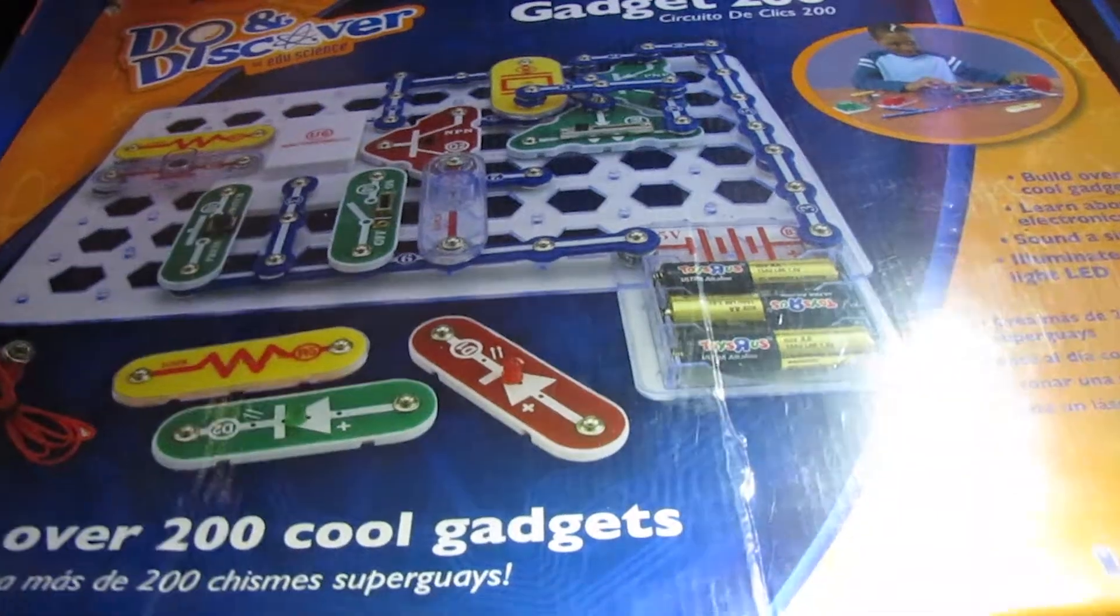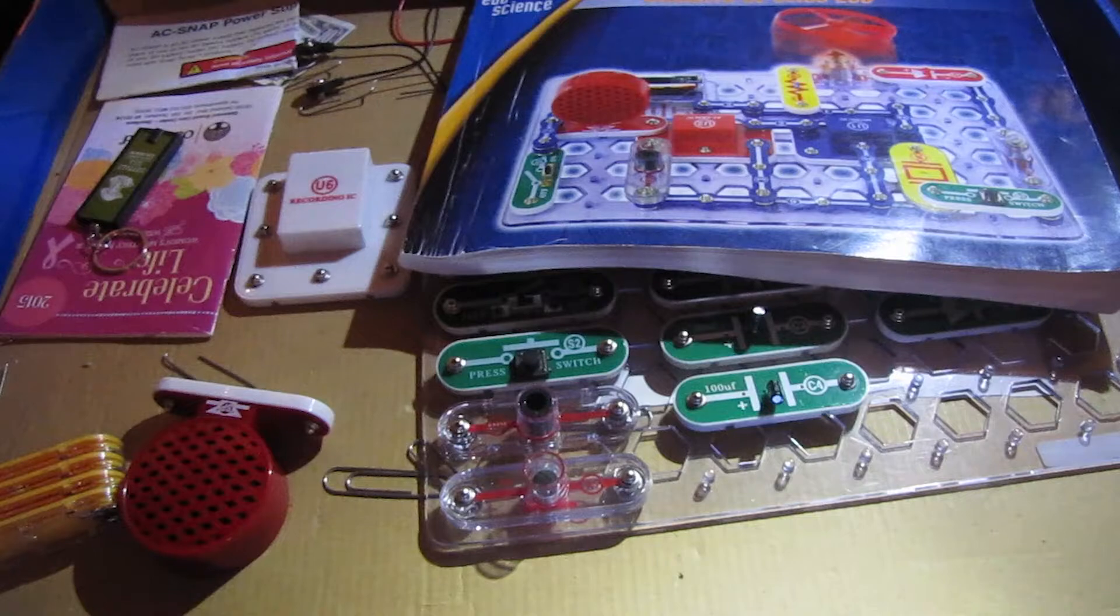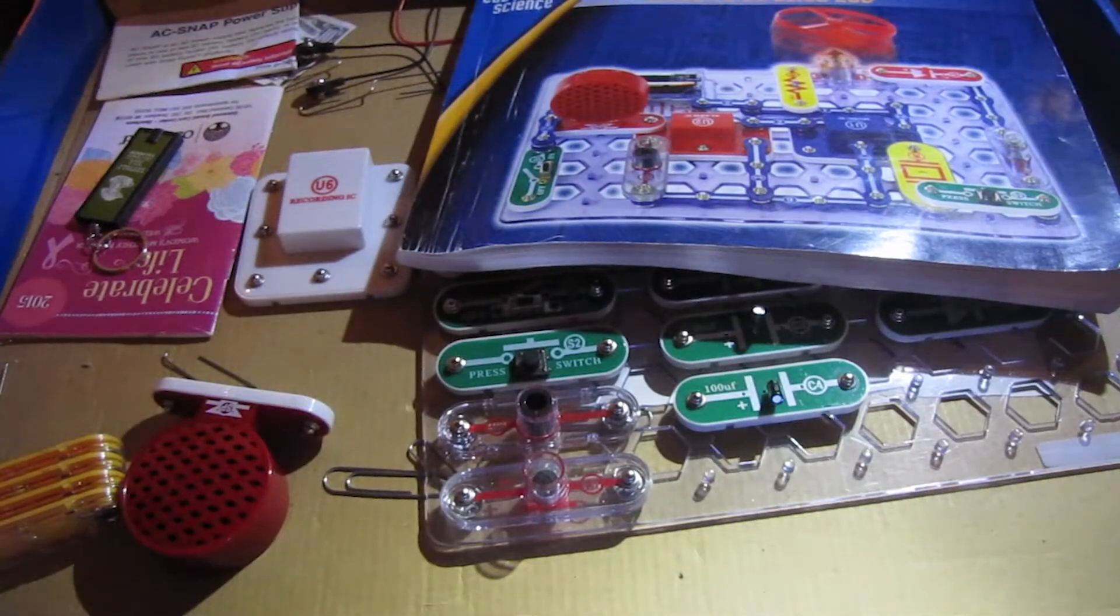This is actually the 2010 revision, I believe, of Snap Circuits. As you can see, I do not have the plastic insert that would normally be here so you can keep the parts organized. And it also would have provided support for the box, which I don't have.